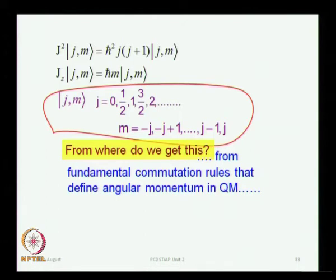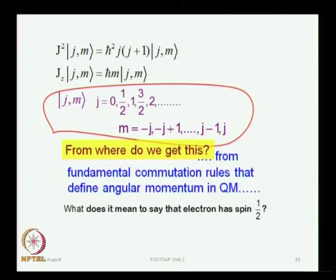We got these results by simply working with the commutation relations — the fundamental commutation relations which define angular momentum. We did not put in additional postulates, no additional mathematics, physics, or quantum mechanics. It was mostly commutation relations and a little bit of common sense. So j can be 0, 1/2, and so on.